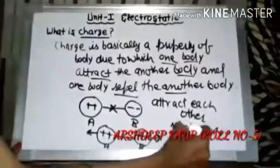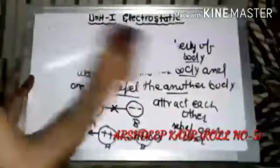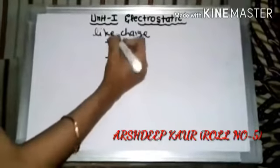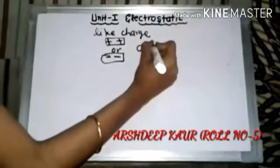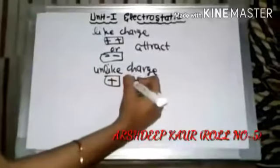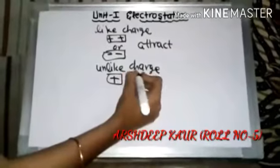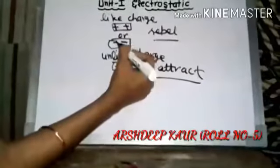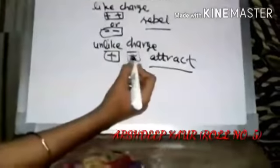Da matlab — like charge matlab positive-positive or negative-negative, like charge tahan repel karengi. Unlike charge, matlab positive and negative, tahan attract karengi. So that's the basic rule about charge.